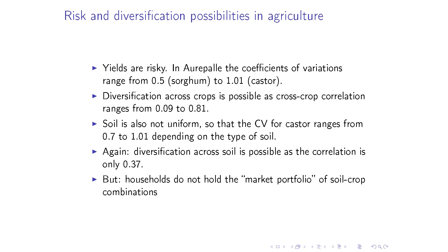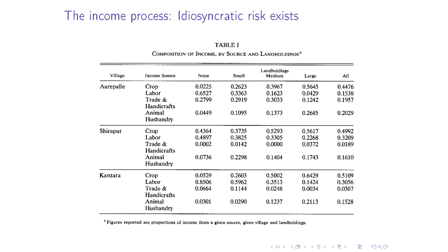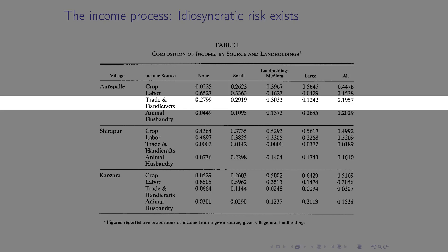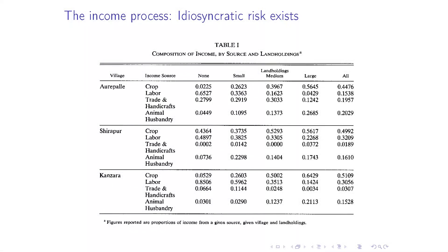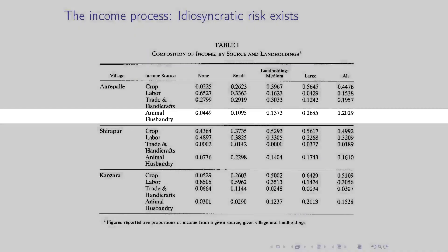That said, households don't hold completely balanced portfolios across soils and crops. One household will plant more of one crop than another, or for castor have more of one type of soil than another, despite all the diversification possibilities. Going outward to other income-generating activities, they can engage in wage labor, trade in handicrafts, or animal husbandry. For example, trade in handicrafts in Arapali consists of climbing palm trees to get fruit to make palm liquor.